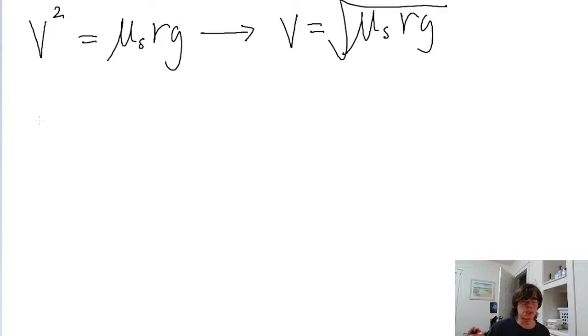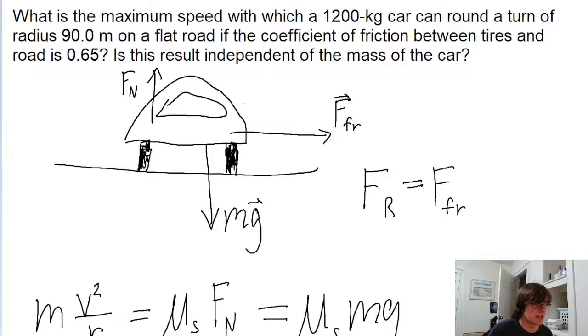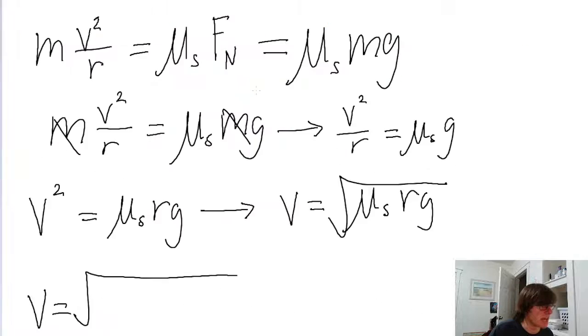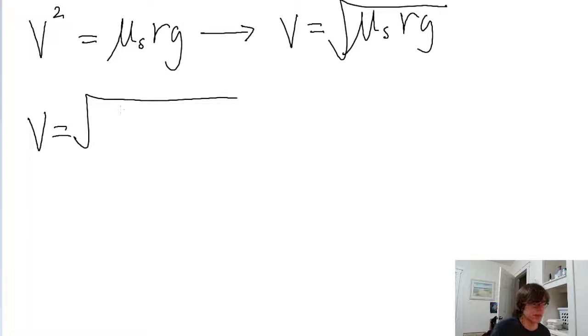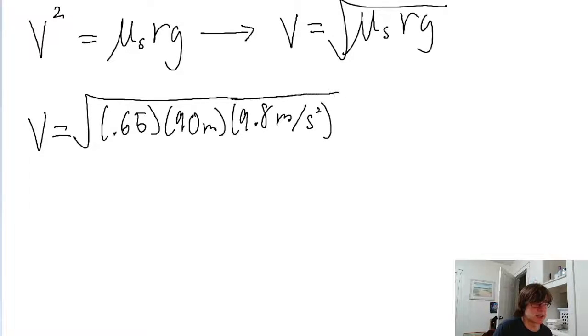So all we've got to do now is plug in the values that were given to us in the problem. The square root of the coefficient of static friction, which is given as 0.65, times the radius of curvature, which is given as 90 meters, times the gravitational acceleration, 9.8 meters per second squared. Put all this into a calculator, we get a speed of about 24 meters per second.